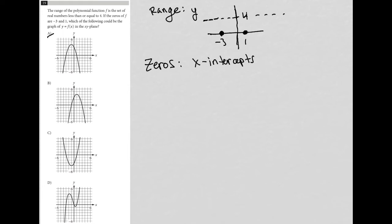So answer choice A looks like it—let's see, this is 1, 2, 3, 4. So it goes up to 4, it exists below 4, so that is a good thing.